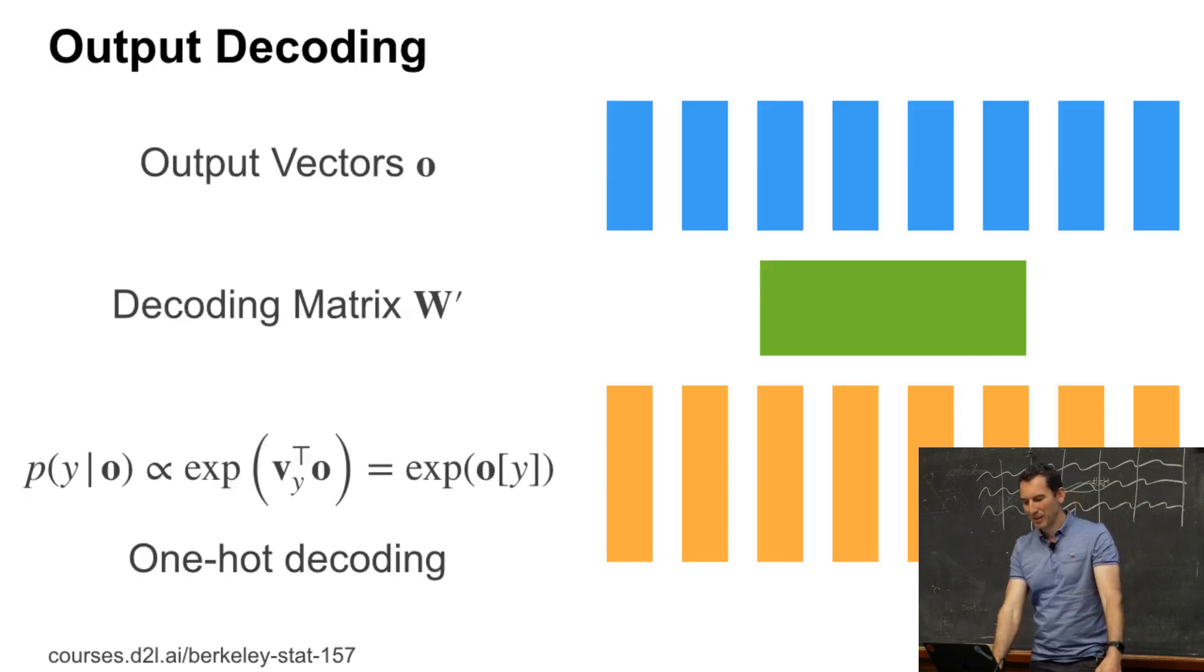And then for the output, you get exactly this. So in the one-hot encoding, you just pick the Y coordinate, but you might have some other decoding vector. Why would you care about having a decoding vector rather than just picking the Y coordinate?